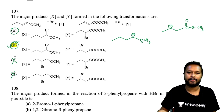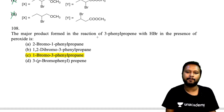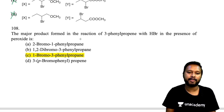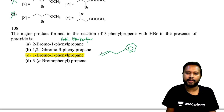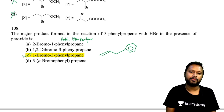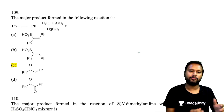Question 108: major product from 3-phenylpropene reacting with HBr in the presence of peroxide. Peroxide conditions give anti-Markovnikov (radical) addition — bromine adds to the terminal carbon (C1). Drawing 3-phenylpropene as Ph–CH₂–CH=CH₂, bromine goes to C1. Option C is the correct answer.